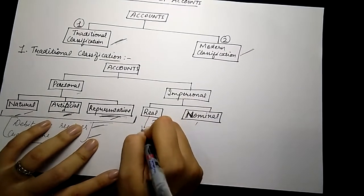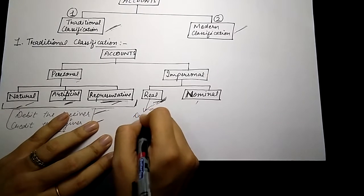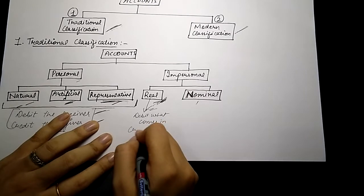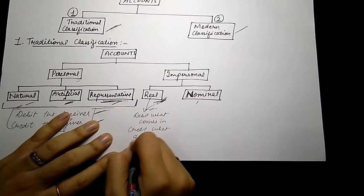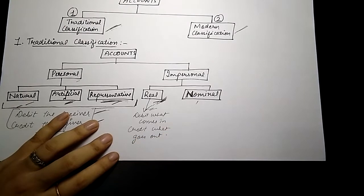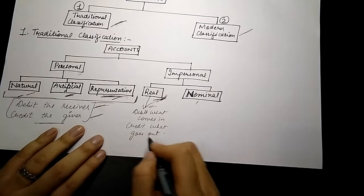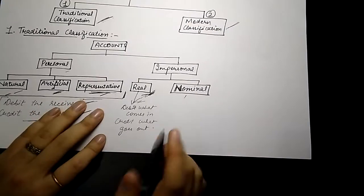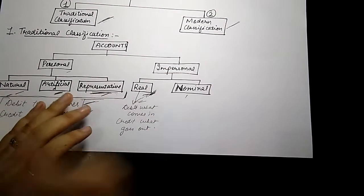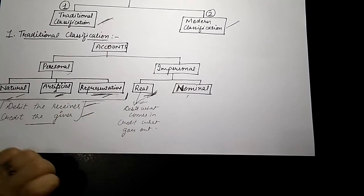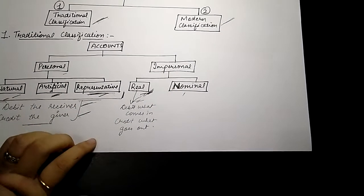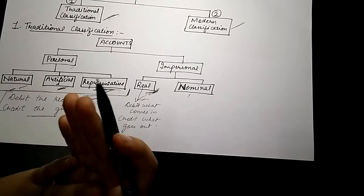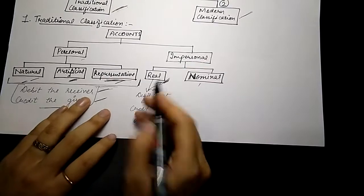For real accounts, you have to remember one rule: debit what comes in and credit what goes out. Suppose I have purchased machinery for cash — I paid cash and I received machinery. In this transaction, what is coming in is machinery, so we will debit machinery. And what is going out is cash, because we are paying cash for machinery, so we will credit cash.